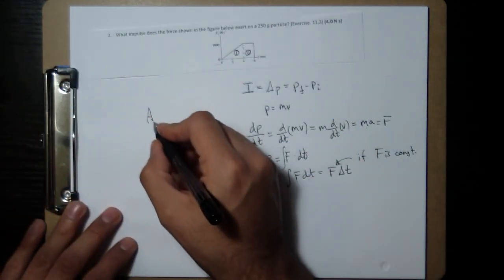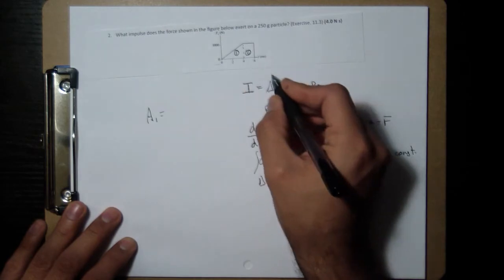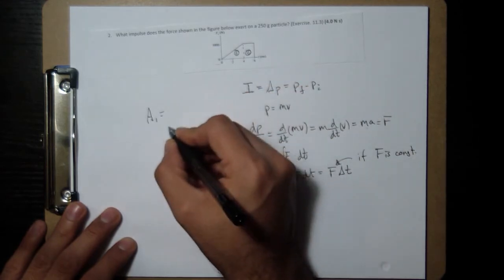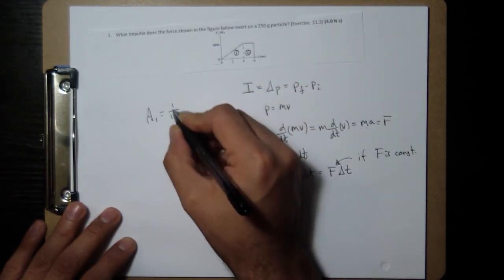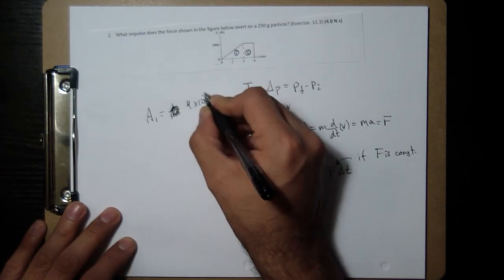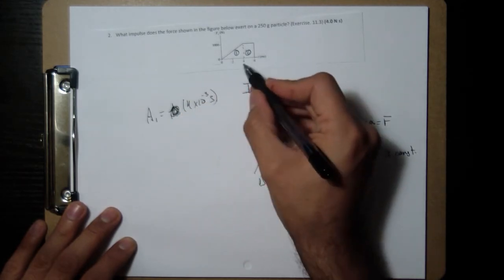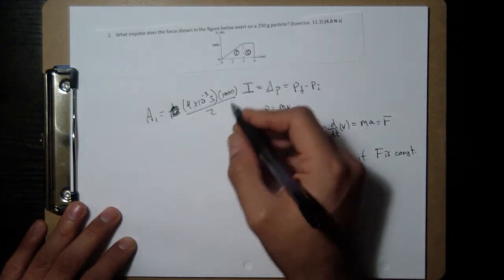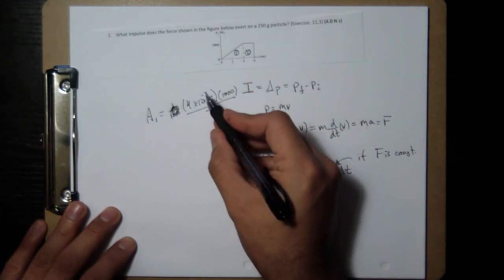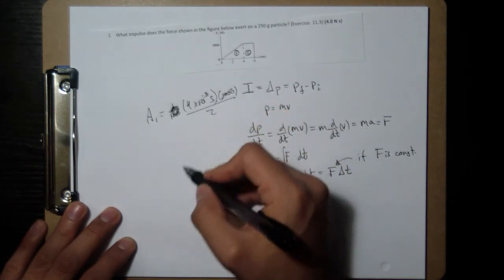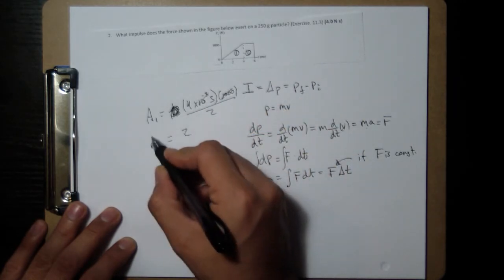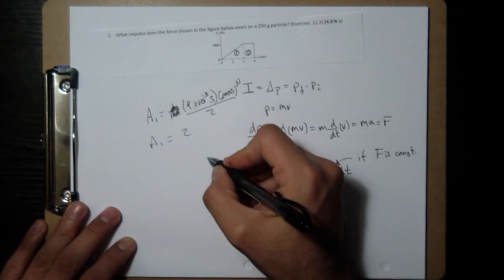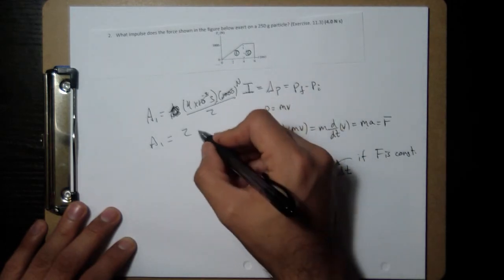So area 1 is going to be 4 milliseconds. So if I want to convert that immediately to seconds, let's do 4 times 10 to the negative 3 seconds times 1000 times a half because of the triangle. And the 10 to the negative 3 and the 1000 cancel out. So you get 4 divided by 2, which is 2. And that's going to be seconds. The 1000 is going to be in Newtons. And so together, they're Newton seconds.